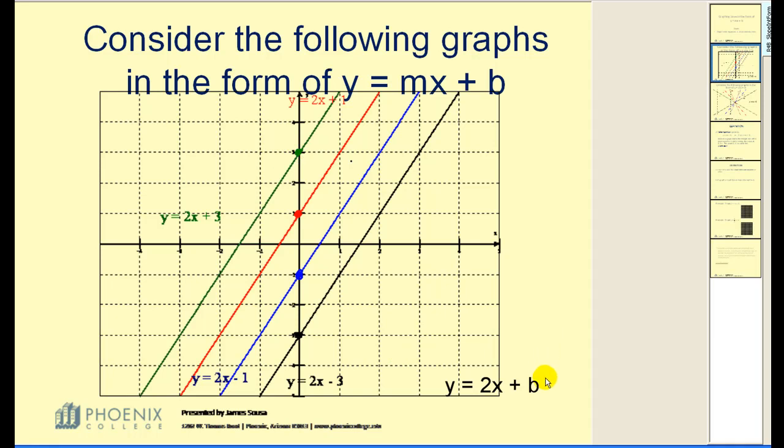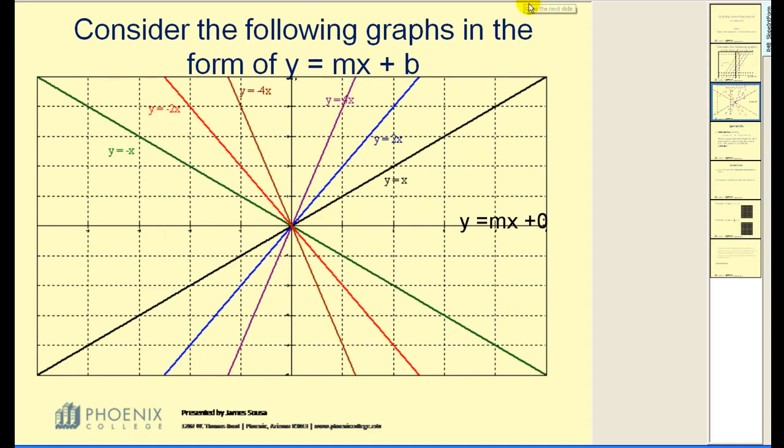Let's now take a look at what happens to the line as we change the value of m. All of these lines are in the form of y equals mx plus zero. So all of them have a y-intercept of zero and pass through the origin, but I varied the value of m, which represents the slope.